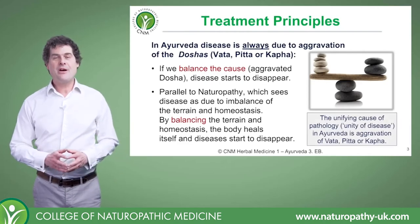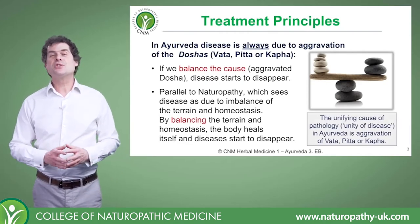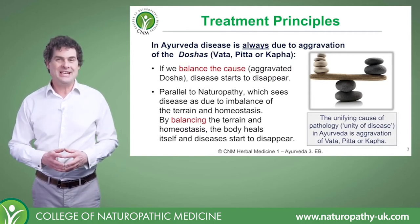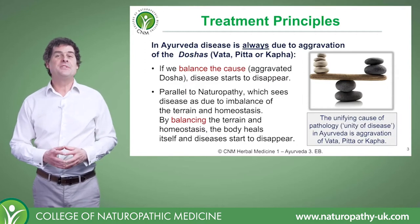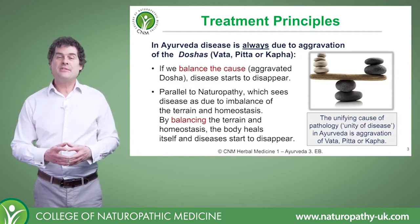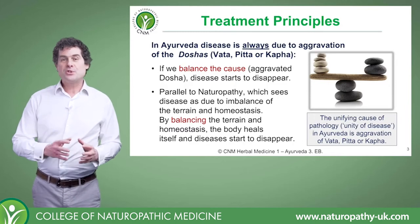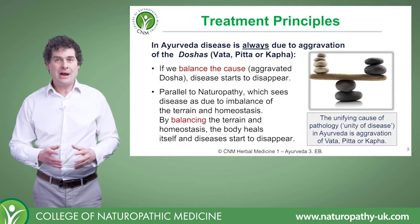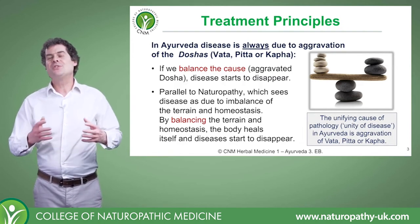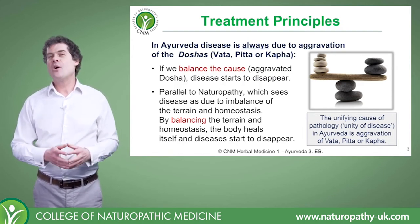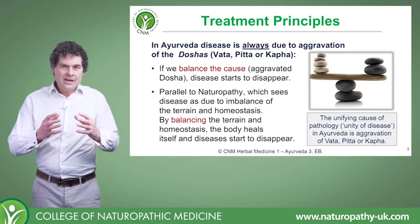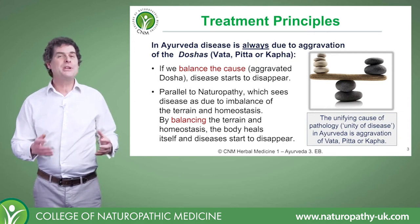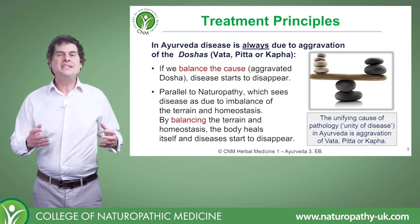The thing we need to remember in Ayurveda is that all diseases are due to imbalances of Vata, Pitta and Kapha. That's the unity of disease. We talk about unity of disease in naturopathy too — often the focus there is on the terrain, on autotoxemia, on lowering of pH. In Ayurveda, we're really talking about the same things, but we use different terms of reference — whether Vata, Pitta or Kapha is imbalanced. We go down to the deeper cause of imbalance. If we can address that deeper cause, the body will heal itself and the disease will disappear.